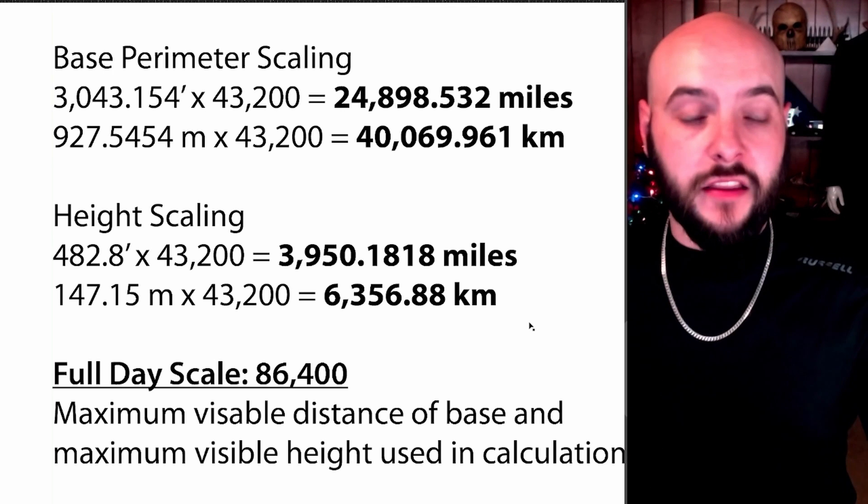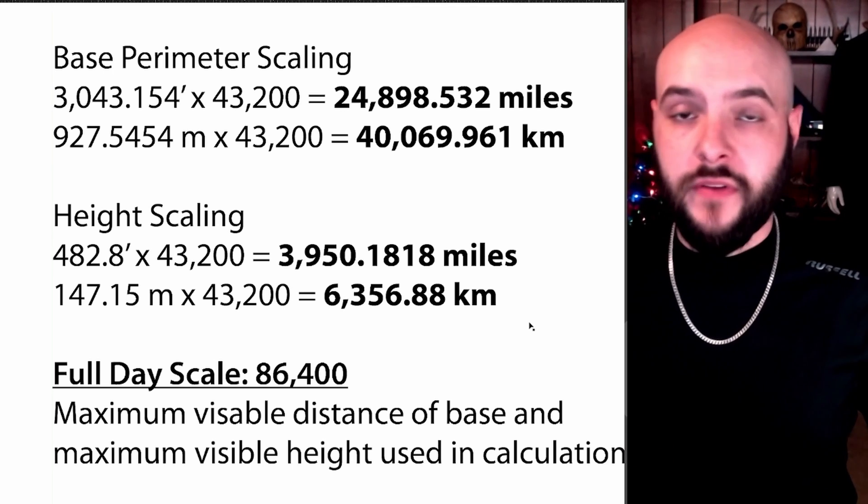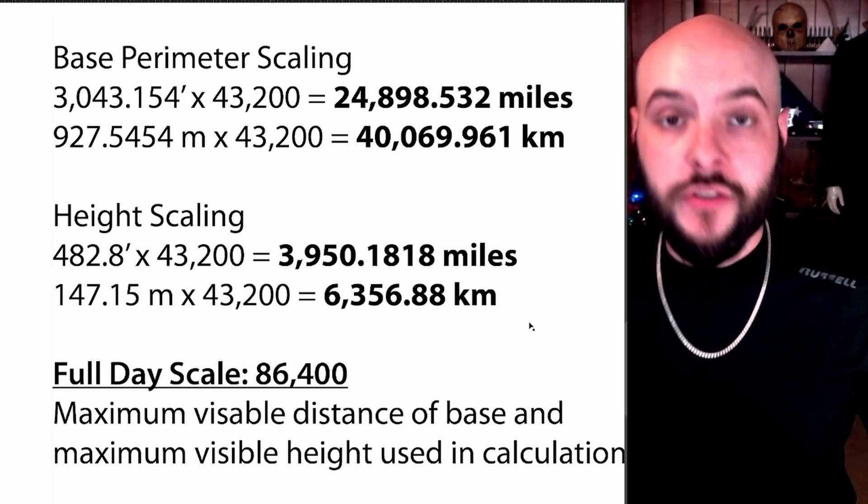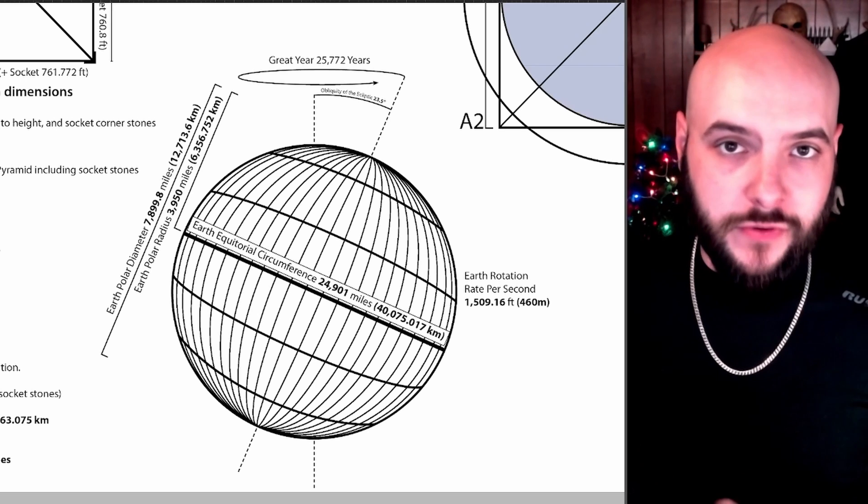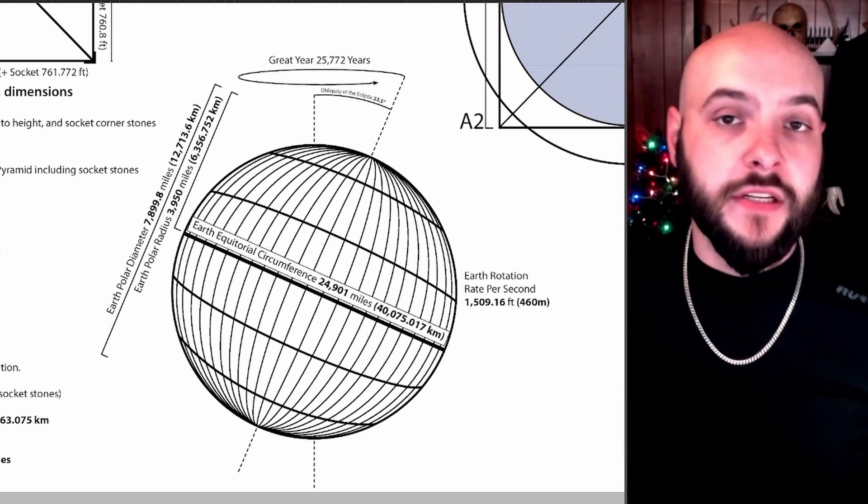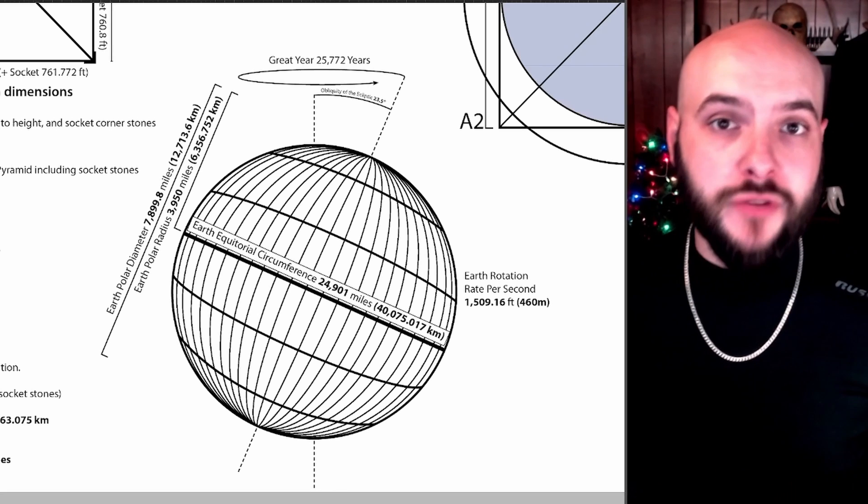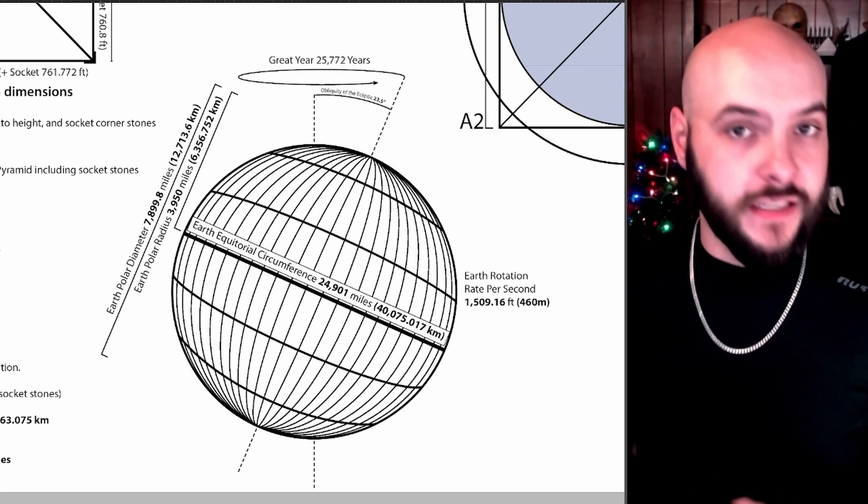And the height of that giant pyramid is now 3,950.1818 miles or 6,356.88 kilometers, which is remarkably close to the polar radius of the planet. Now keep in mind that as the planet travels through space, it's able to shift and twist and bulge itself into different dimensions so that every time we measure it, we could come out with a different outcome, which could also explain the discrepancy in these numbers.